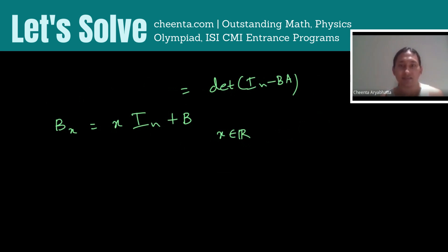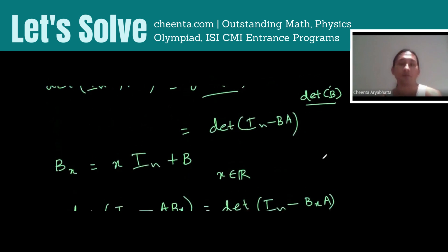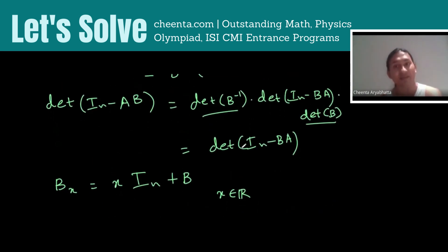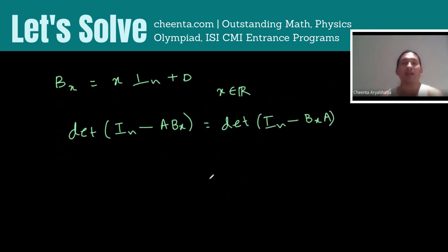Now, if BX is invertible then we have determinant of IN minus ABX is equal to determinant of IN minus BX A. So this is something that we have already proven before. If B is invertible then there is no problem.